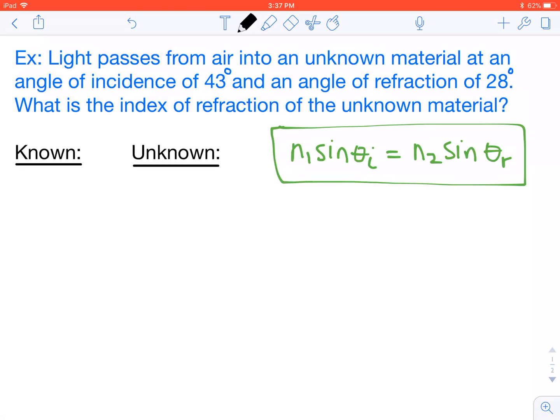So we take a look at our problem here. We have light passing from air into an unknown material. Our angle of incidence is 43 degrees and our angle of refraction is 28 degrees. We want to know what is the index of refraction.